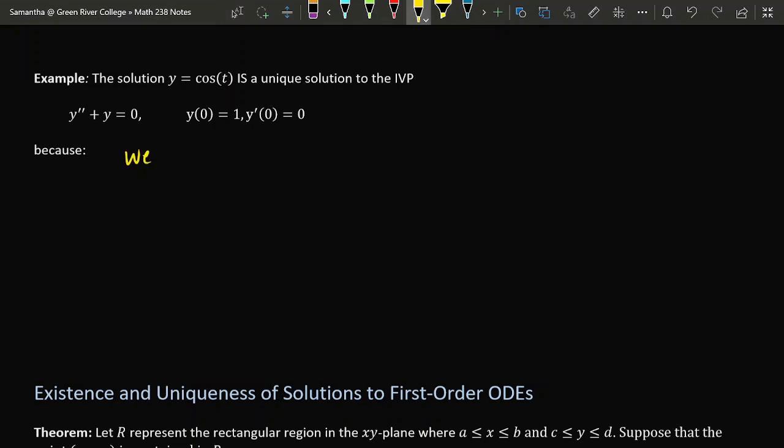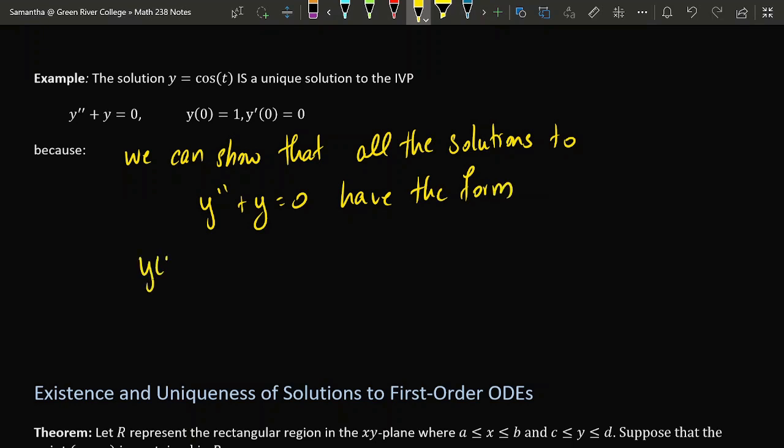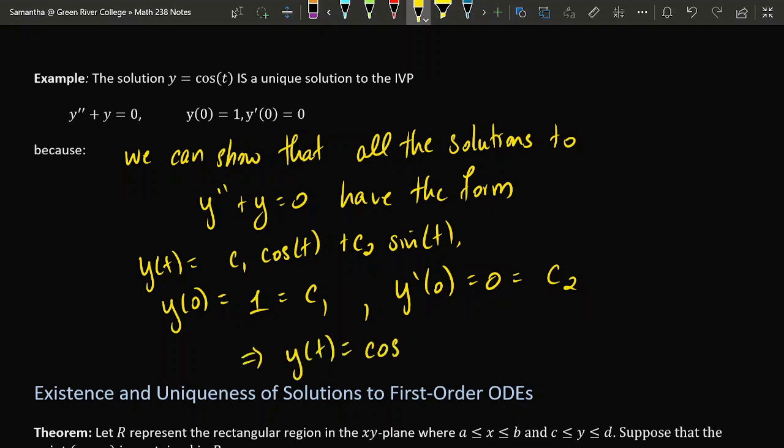That's because we can show that all the solutions to y'' + y = 0 must have a particular form. The first condition is what forces c₁ to be 1 and the second condition forces c₂ to be 0, and this forces the solution to be equal to cos(t) and nothing else. Thus, this is the only solution to this problem, therefore we would say that it is unique.